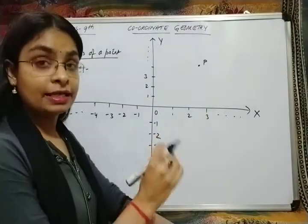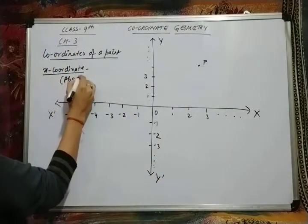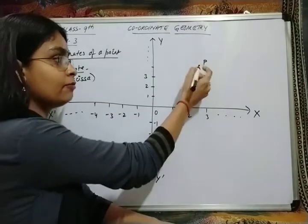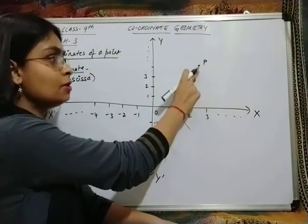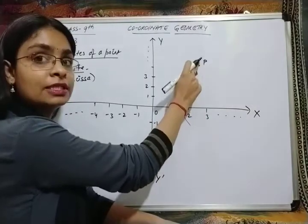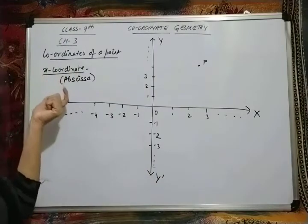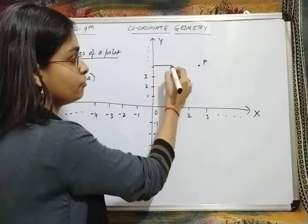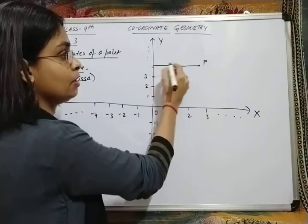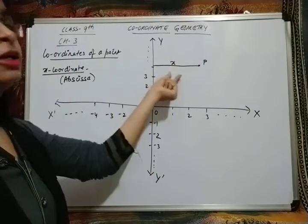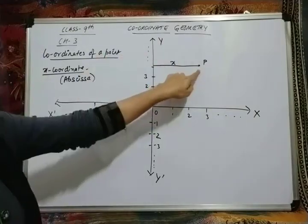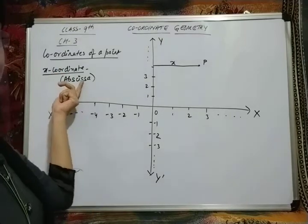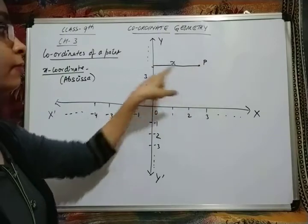The x-coordinate is also known as the abscissa. To find the x-coordinate of a point, we find the perpendicular distance of that point from the y-axis. If I draw a perpendicular from the y-axis to the point and suppose this distance is x units, then x is the x-coordinate of the point. So the x-coordinate, also known as abscissa, is the perpendicular distance of any point from the y-axis.